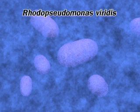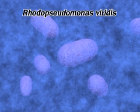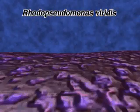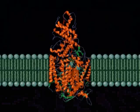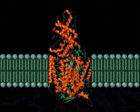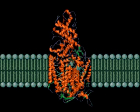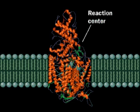Certain bacteria are photosynthetic. This is a model of the photosynthetic reaction center of one of them, Rhodosudomonas viridis. This reaction center is embedded in a membrane and pumps protons across the membrane. Within the reaction center protein are a pigment and several electron carriers.